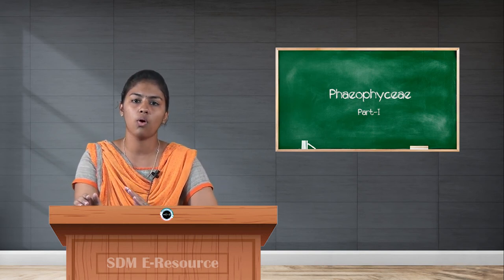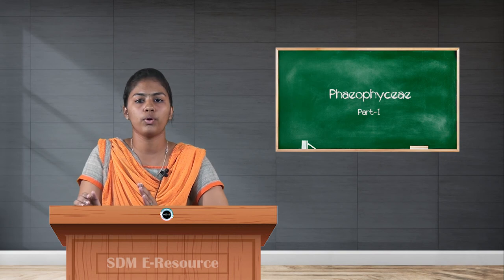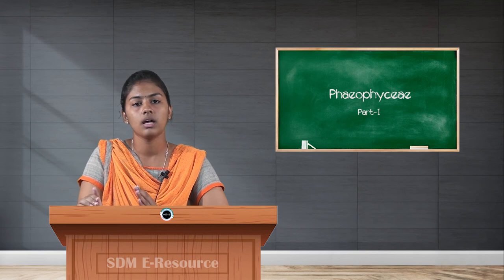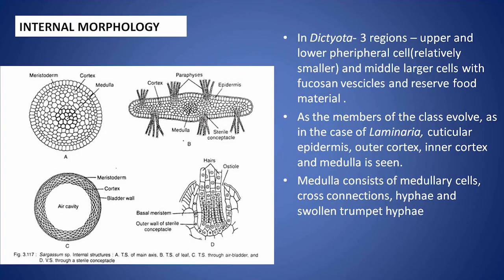As the class evolves, in the case of Fucales and Laminariales, you can differentiate the cortex or inner thallus into three regions: the outer epidermis, middle cortex, and inner cortex.